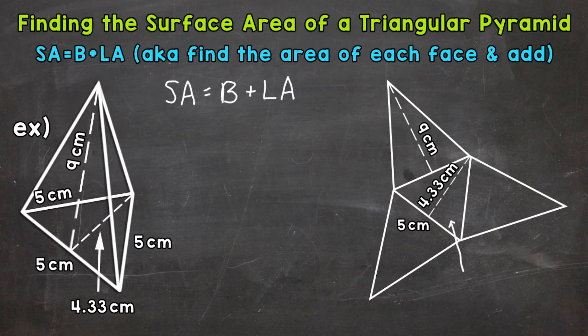In order to find the area of a triangle, we use the formula: area equals one-half times the base times the height of that triangle. You may also use the formula base times height divided by two — it's the same thing, because multiplying by a half is the same as dividing by two. Use whatever formula you'd like for the area of a triangle.